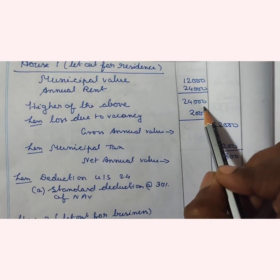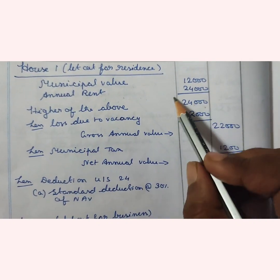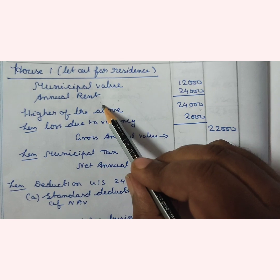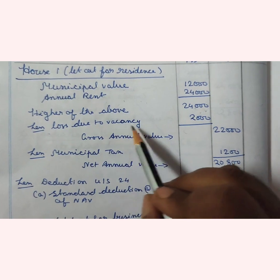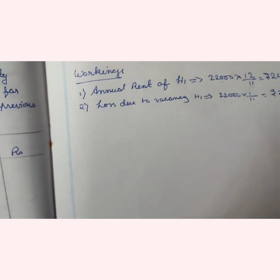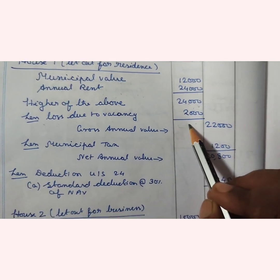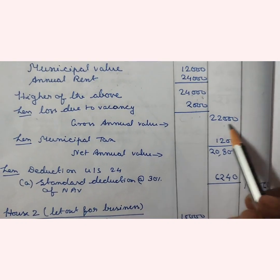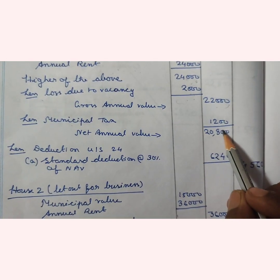Comparing municipal value ₹12,000 and annual rent ₹24,000, we get the higher of the two as ₹24,000. There is no question of reasonable expected rent here. From this ₹24,000 we deduct loss due to vacancy of ₹2,000, which we already computed. After deducting ₹2,000 from ₹24,000, we get a gross annual value of ₹22,000.